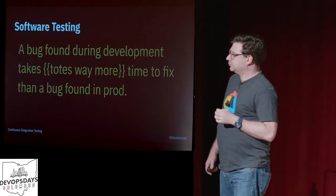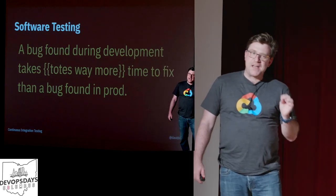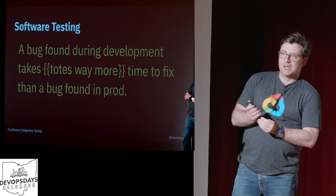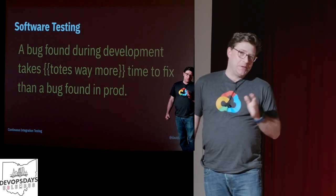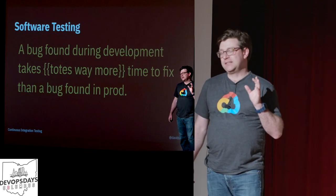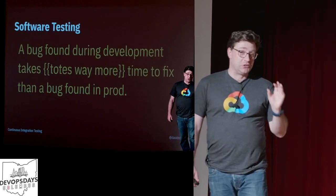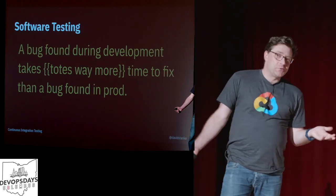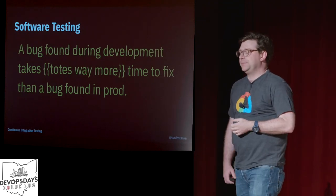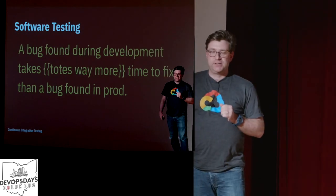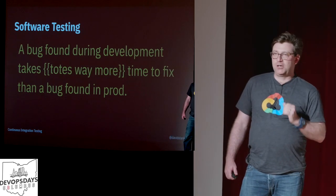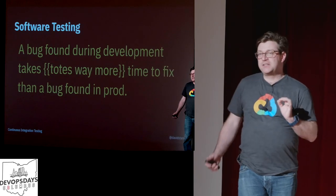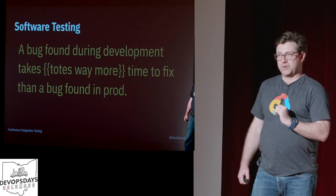Why do all this testing? Why do we need fast feedback cycles all along the way? Because Toyota does it. How many people here have an organization as successful as Toyota, and successful for as long as Toyota? Most of us should just cargo-coat what they did. The reason is that just like a Corolla, software gets more complicated as it moves — and this means fixing bugs becomes harder and harder as it moves through the process.